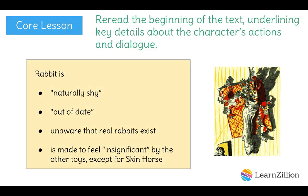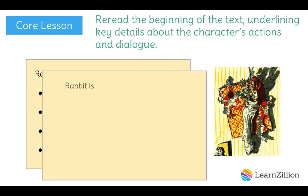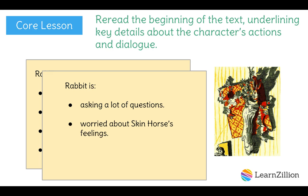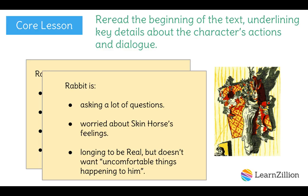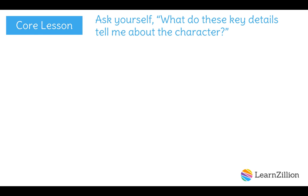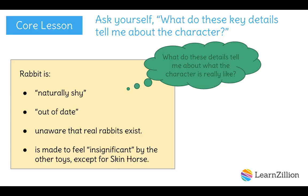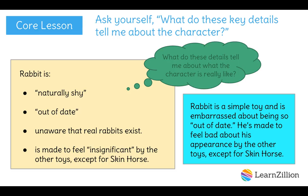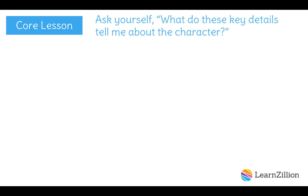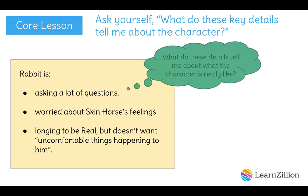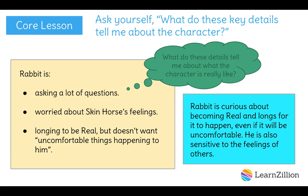I'm going to add a few points to my notes here about Rabbit's actions and dialogue from this section that we reread. First, I noticed that Rabbit is asking a lot of questions. Also, Rabbit is worried about skin horse's feelings, and he is longing to be real, but he doesn't want uncomfortable things happening to him. Now I'm going to ask myself, what do these key details tell me about the character? What do these details tell me about what the character is really like? Taking my notes and rephrasing them: Rabbit is a simple toy and is embarrassed about being so out of date. He's made to feel bad about his appearance by the other toys except for skin horse. Rabbit is curious about becoming real and longs for it to happen, even if it will be uncomfortable. He's also sensitive to the feelings of others.